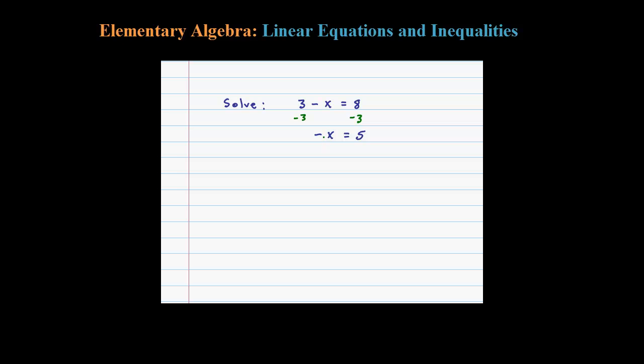You can think of that as a coefficient of negative 1. So if I divide both sides by negative 1, a negative divided by negative is positive. That's going to leave me with positive 1x equals negative 5.